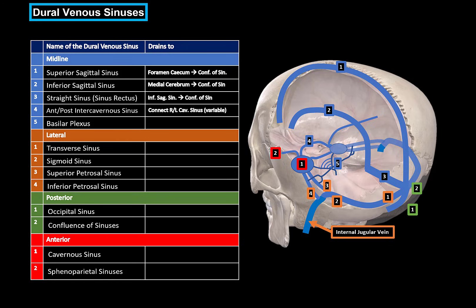More anteriorly we find the anterior and posterior intercavernous sinuses, which connect the right and left cavernous sinuses together. Depending on your source, these can be called anterior, posterior, or even inferior intercavernous sinuses, but the function is the same. The basilar plexus connects regional venous structures. The transverse sinus drains the confluence of sinuses into the sigmoid sinus. The sigmoid sinus is a continuation of the transverse sinus and has a characteristic S-shaped form as it goes toward the jugular bulb of the internal jugular vein.